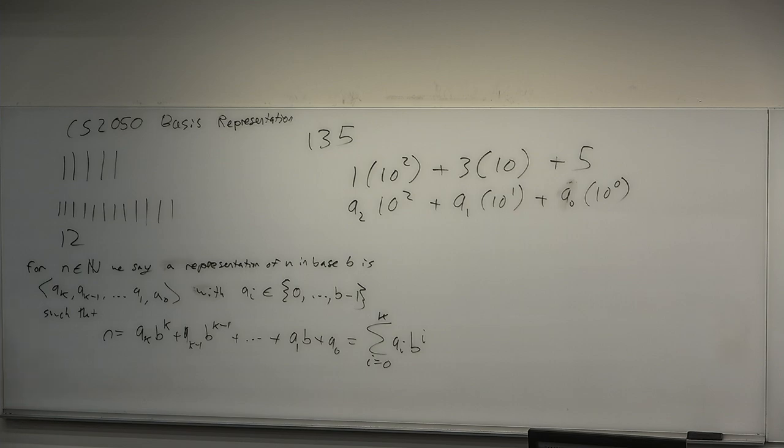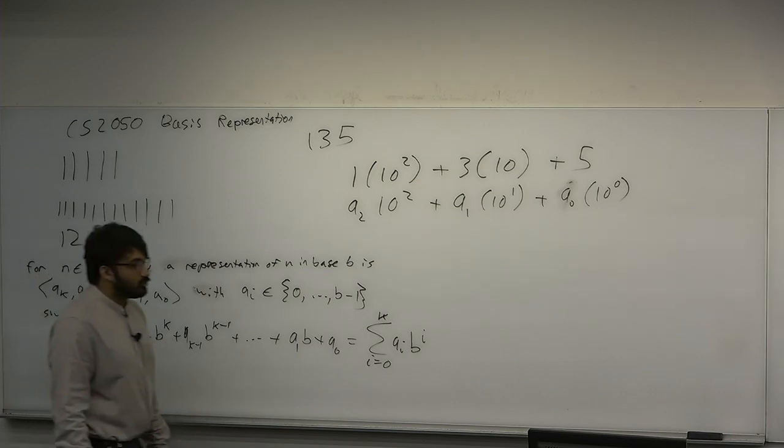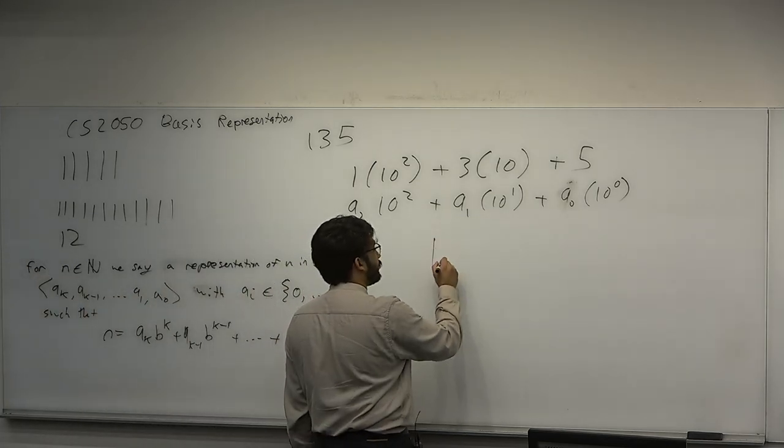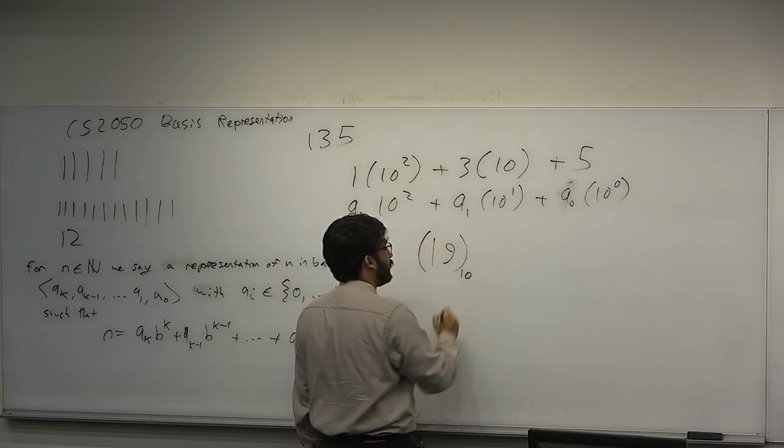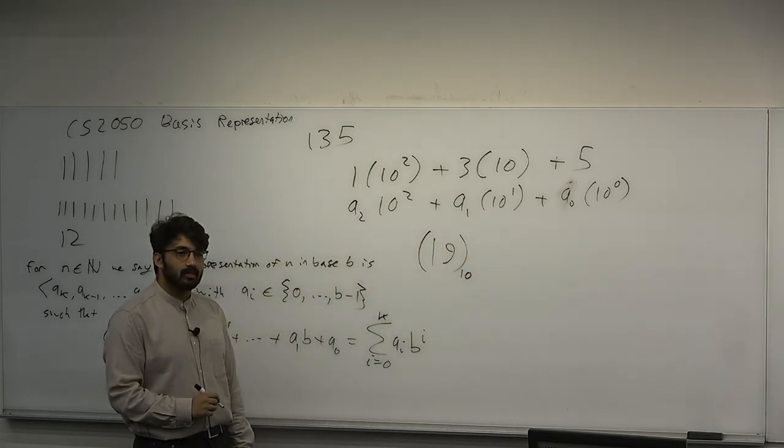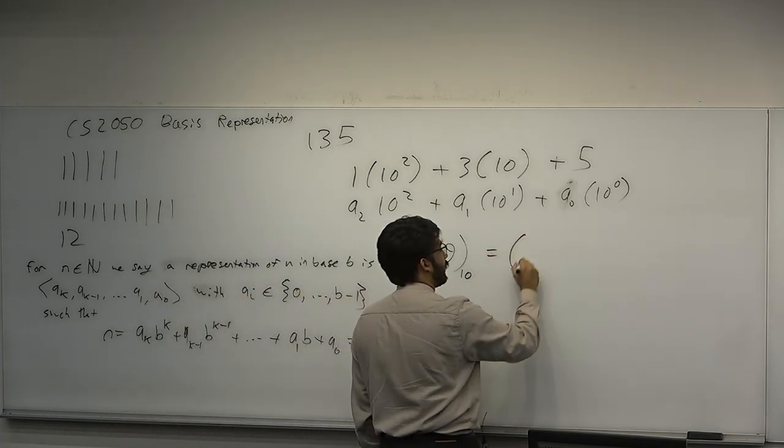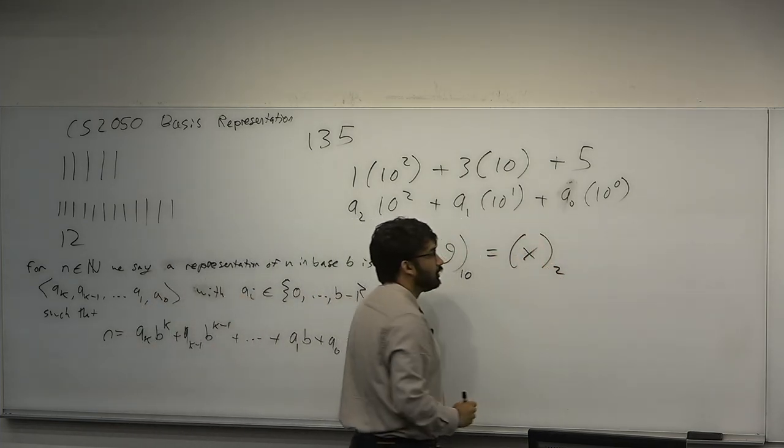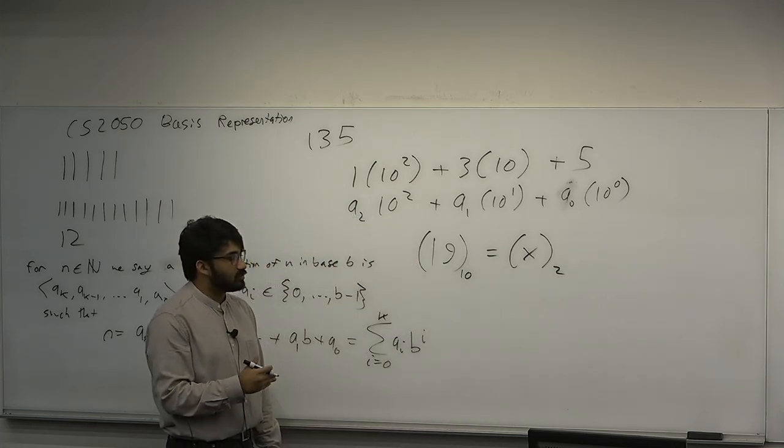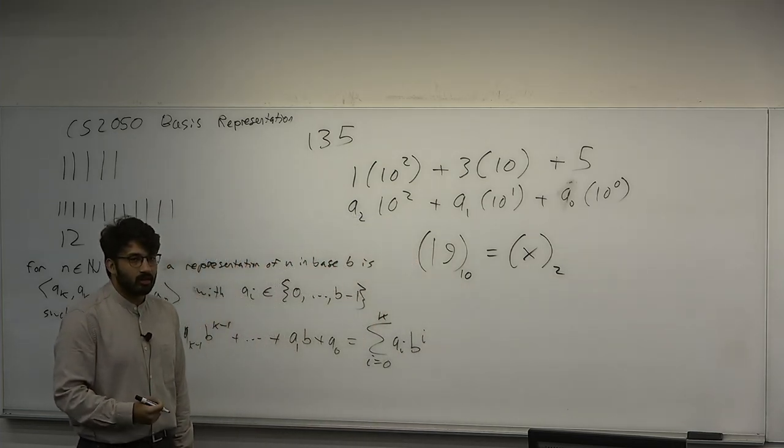But computers don't have 10 fingers. They have a positive and negative signal. So we represent mathematical objects on a computer using base 2. And you may know that every number has a base 2 representation. So let's say 19, and we'll write 19 in base 10. And we'll do a little subscript like that to mean that that is 19 written in base 10. Let's suppose we wanted to write this as some x in base 2, right? So we want to write this in such a way that it's a summation of powers of 2. So let's convert the number 19 to base 2.